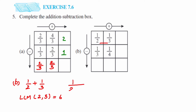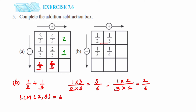For 1/2, we multiply numerator and denominator by 3 to get 3/6. For 1/3, we multiply numerator and denominator by 2 to get 2/6. Now adding: 3/6 plus 2/6 — keep the denominator 6, and 3 plus 2 equals 5. So the answer is 5/6.